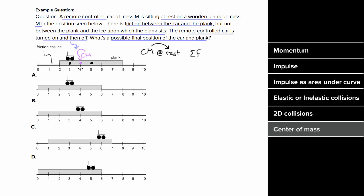So to find the correct solution, we just need to figure out which one of these also has the center of mass at four. Option A has the car at three and the center of the plank at three. That'd put the center of mass at three meters, but that can't be right. The center of mass can't move.